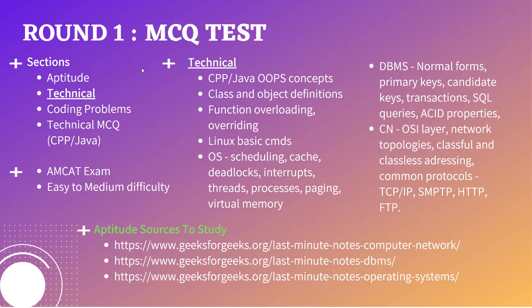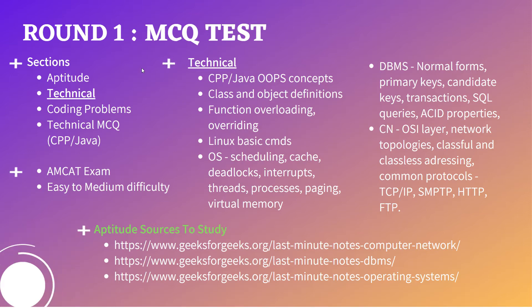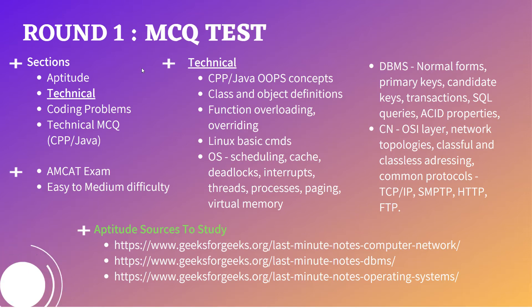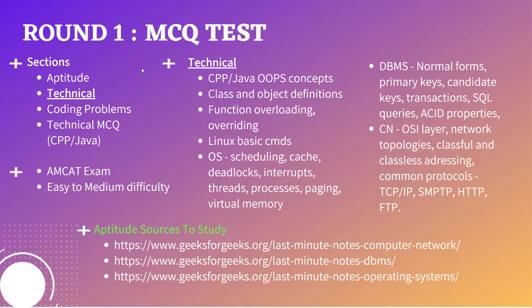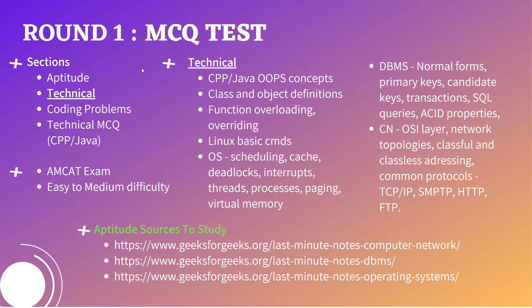In DBMS, focus on normal forms, primary keys, candidate keys, transactions, and SQL queries — SQL queries in particular can be asked with two dedicated questions. ACID properties are also important. For computer networks, you should know the OSI layers, network topologies, and particularly the physical layer and network layer, as many questions come from those. Classless and classful addressing is less frequently asked but can also appear.